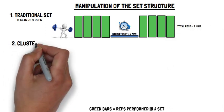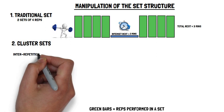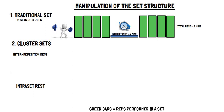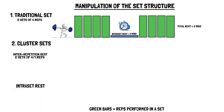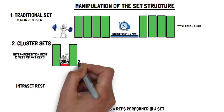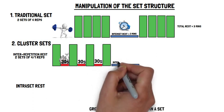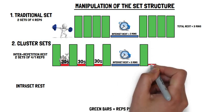Whereas cluster sets are an extended set structure where repetitions are performed with inter-repetition or intra-set rest intervals that are placed within the set. For example, if two sets of four repetitions were to be performed with an inter-repetition rest interval of 30 seconds, it means 30 seconds rest is taken after every rep until the inter-set rest period — for example, three minutes — before performing the second set in the same manner.